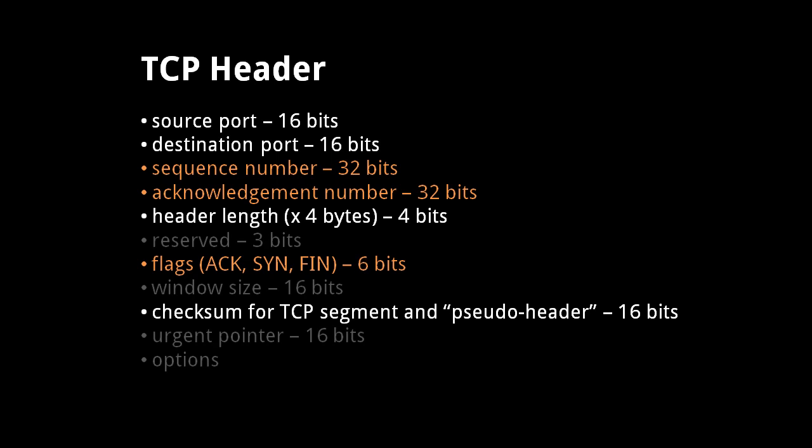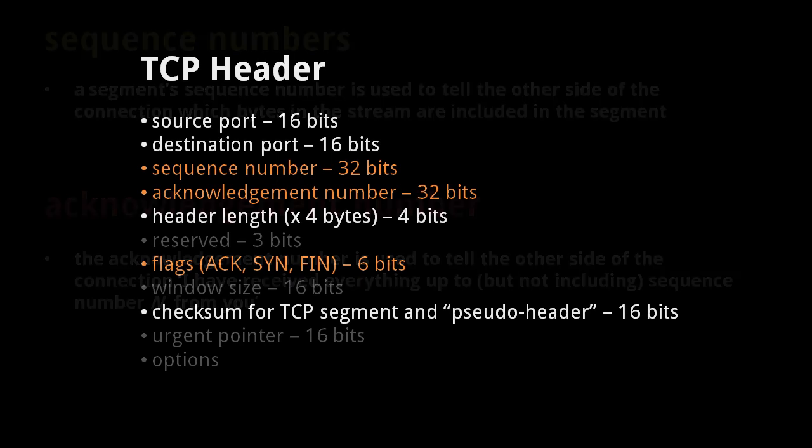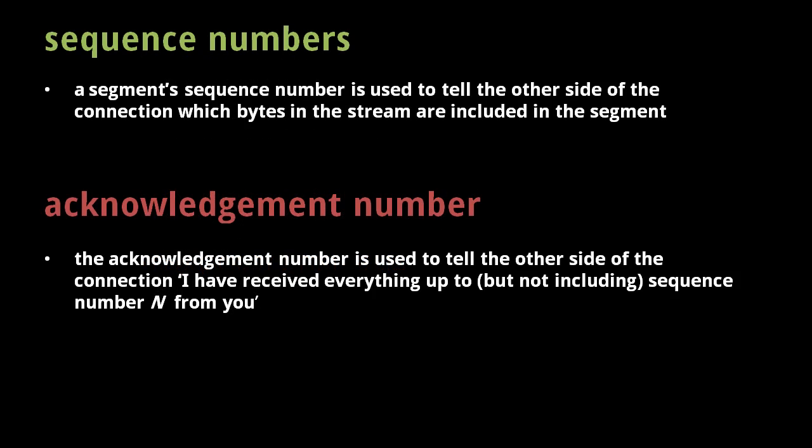A TCP header also includes three reserved bits, a window size, an urgent pointer, and options, but we won't discuss these. When two processes exchange data over TCP, they form a connection, and each TCP connection represents two streams of bytes, one going in each direction.